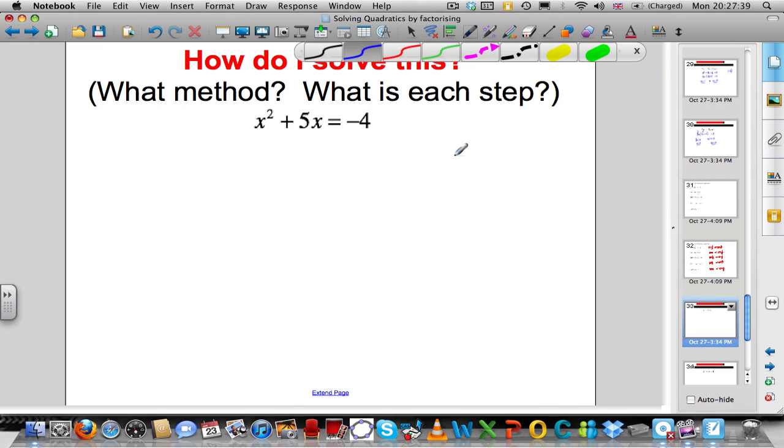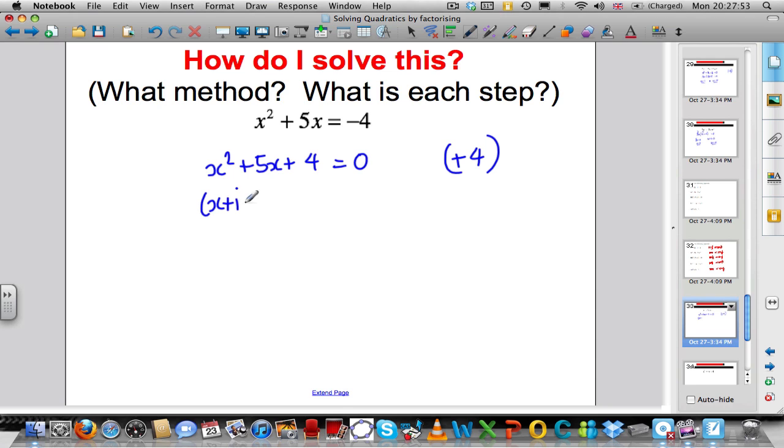How do I make this 0? Add 4 to both sides of the equation. I would get x squared plus 5x plus 4 equals 0. Now I can factorise. I'm not going to go into the details, but this factorises to x plus 1, x plus 4 equals 0.